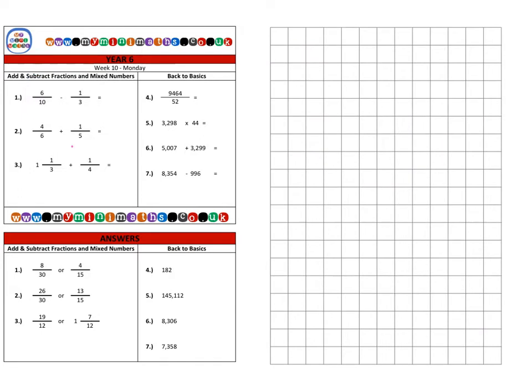Next we're on to question 2, which is 4 sixths. This time we're going to be adding, so finding the sum of these two fractions. We're going to add 1 fifth to 4 sixths.